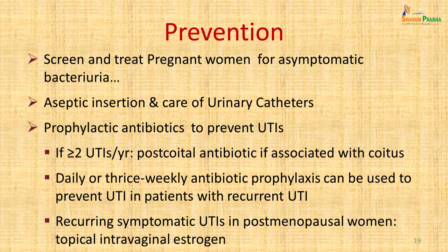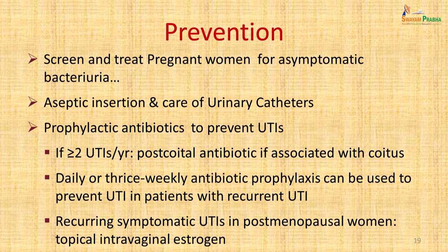Prevention of UTI: it is important to screen and treat all pregnant women for asymptomatic bacteriuria to prevent adverse pregnancy outcomes. Aseptic insertion and care of urinary catheters prevents catheter-associated UTI. Prophylactic antibiotics have a role if more than two UTIs occur — post-coital antibiotics can be considered if infections are consistently post-coital. Daily or thrice-weekly antibiotic prophylaxis can prevent recurrent UTI. Recurring symptomatic UTI in post-menopausal women can be treated with topical intravaginal estrogens.